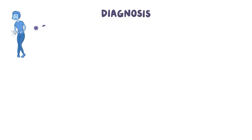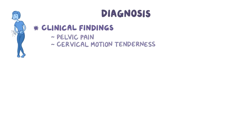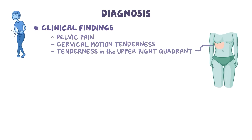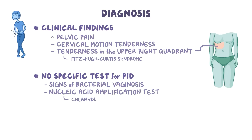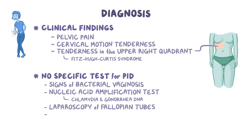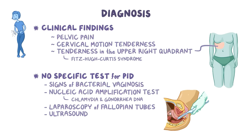Diagnosis of PID is usually based on clinical findings, particularly pelvic pain and cervical motion tenderness, which is when mobilizing the cervix during a vaginal exam causes pain or discomfort. Tenderness in the right upper quadrant of the abdomen is also common if Fitzhugh-Curtis syndrome has developed. There is no specific test for PID, but supporting tests include testing vaginal discharge for bacterial vaginosis, a nucleic acid amplification test to look for chlamydia and gonorrhea DNA from a vaginal or cervical sample, laparoscopy of the fallopian tubes, or an ultrasound to check for fluid, tubo-ovarian abscess, or hydrosalpinx.